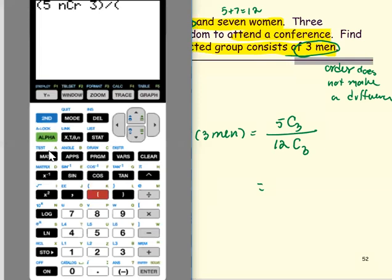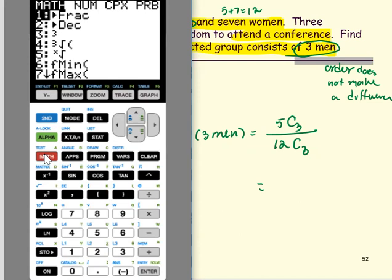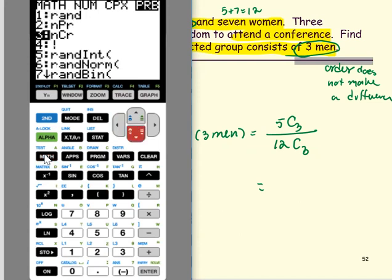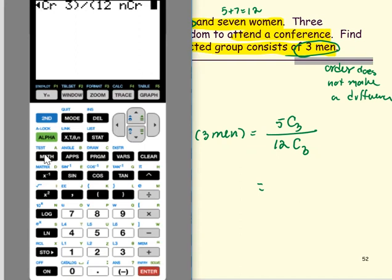Open the parentheses. We have total 12 people. Combination. So select the math, PRB, number 3. And choose 3 from the group of 12 people.